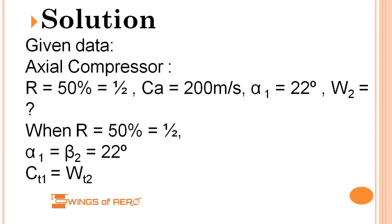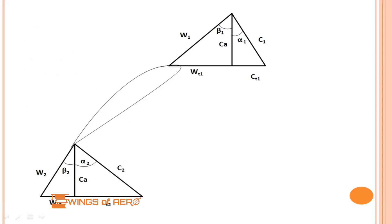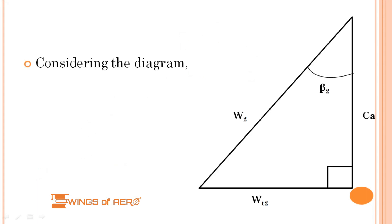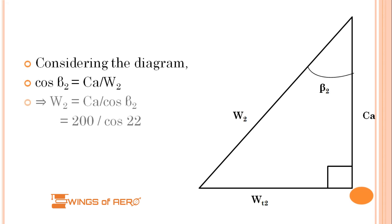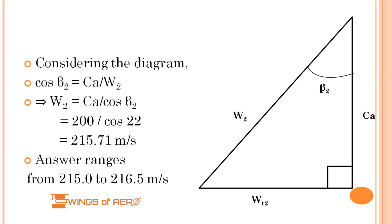Also note that C_t1 equals W_t2. Recalling the velocity triangle diagram and identifying the desired quantities — C_a, W_t2, W2 — we need to find W2. Since β2 = 22° and axial velocity C_a is constant, we use: cos β2 = C_a / W2. Substituting: W2 = 200 divided by cos 22°, giving W2 = 215.71 m/s. The accepted answer range is 215.0 to 216.5 m/s.